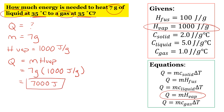The most challenging part of these questions is figuring out which equation to use. Any time we are changing temperature without changing states, we use the mc delta T equation. Any time we are changing phases, we use the heat of vaporization equation. Good luck, and have fun with these.